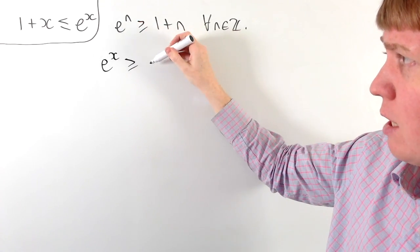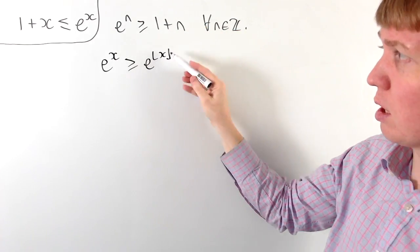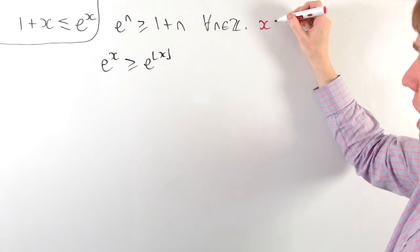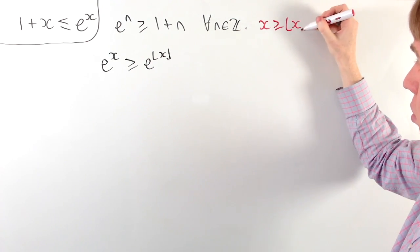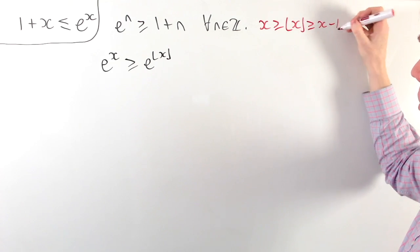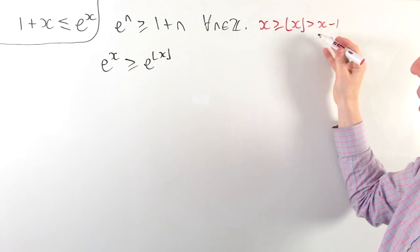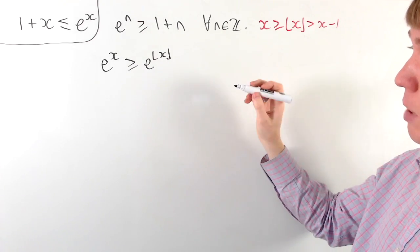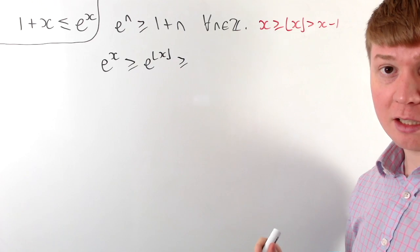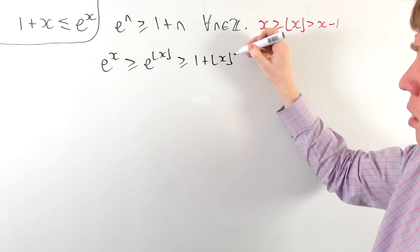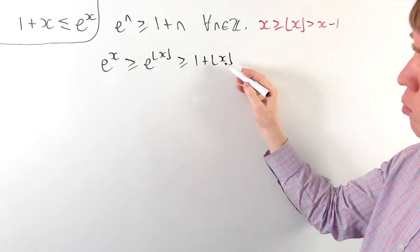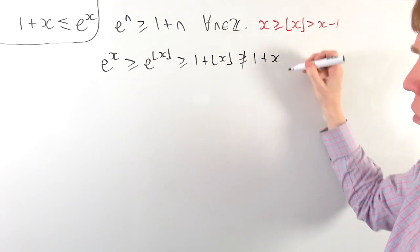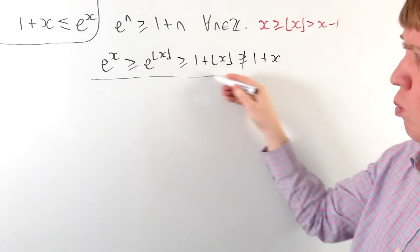So e to the x would have to be greater than or equal to e to the floor function of x, which gives an integer power. We'd use the fact that the floor function is what you get when you round down: x is greater than or equal to floor(x), and floor(x) is strictly greater than x minus 1. However, we run into a problem: the floor function of x is actually less than or equal to x, so in general it wouldn't be true that 1 plus floor(x) is less than or equal to 1 plus x. So this approach isn't quite going to work as stated.